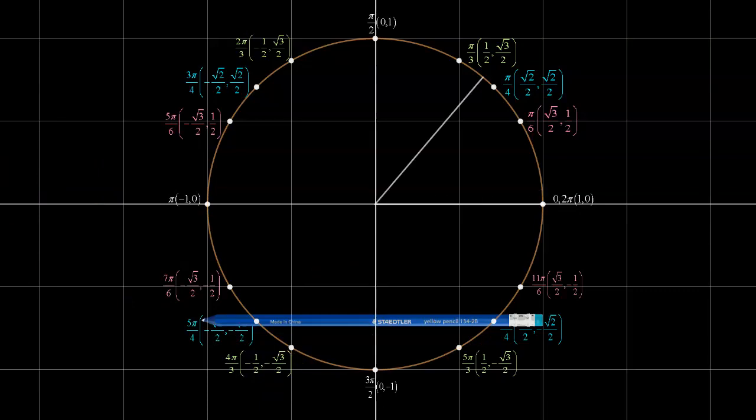And so I will indicate that with the two terminal arms. So I've got 7 pi over 4, which is right about there, and 5 pi over 4, which is right about there, and so those would be my two solutions on the domain 0 to 2 pi.